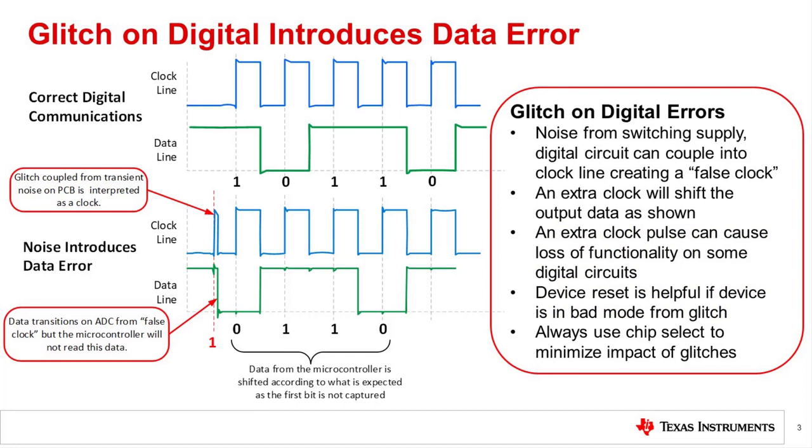This type of issue is especially problematic in cases where a chip select pin is not used as the data is thrown out of sequence. In some cases, the extra clock can put the device into an undefined mode so that a reset may be required. Another type of data error would be for a transient on the data line to introduce an erroneous data value. Ideally, you should avoid these kinds of issues by keeping your communication lines short and isolated from interference sources. However, in some cases this may not be practical.